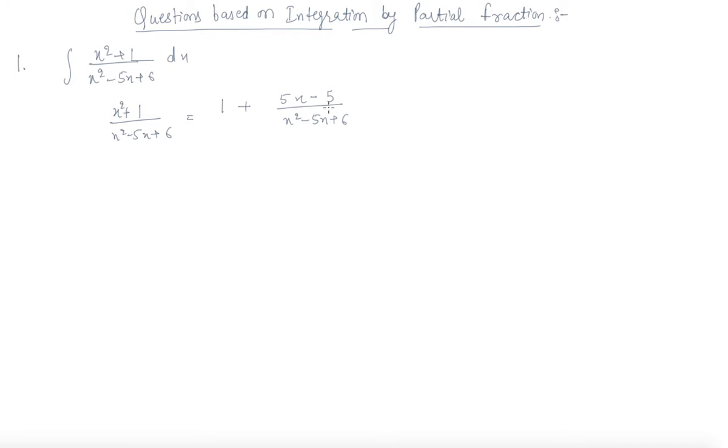So this 5x got cancelled and 6 minus 5 will become 1 in the numerator part. And this is x minus 2 into x minus 3.